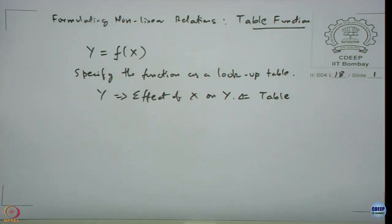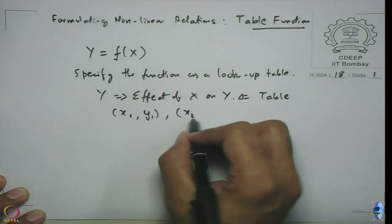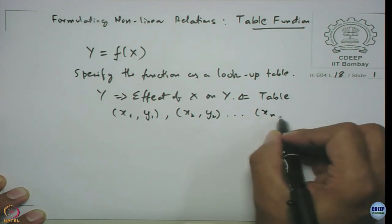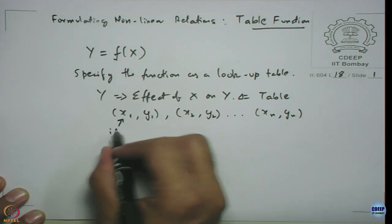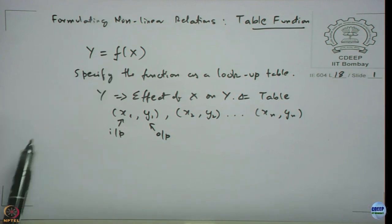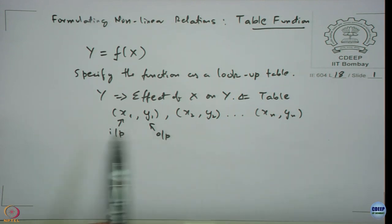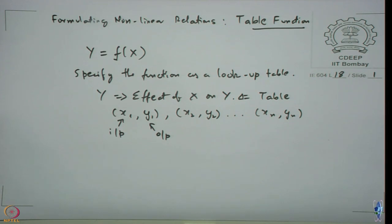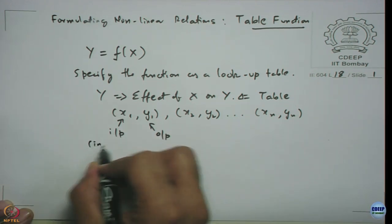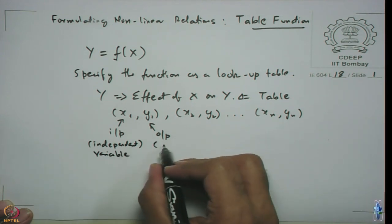This effect we want to specify as a table, meaning we give pairs of (x1, y1), (x2, y2) and so on, where x is your input and y is your output. We specify that set of values and use it in a simulation, allowing the simulation to either interpolate between values or extrapolate if the input goes beyond the specified range, since x is the independent variable and y is the dependent variable.